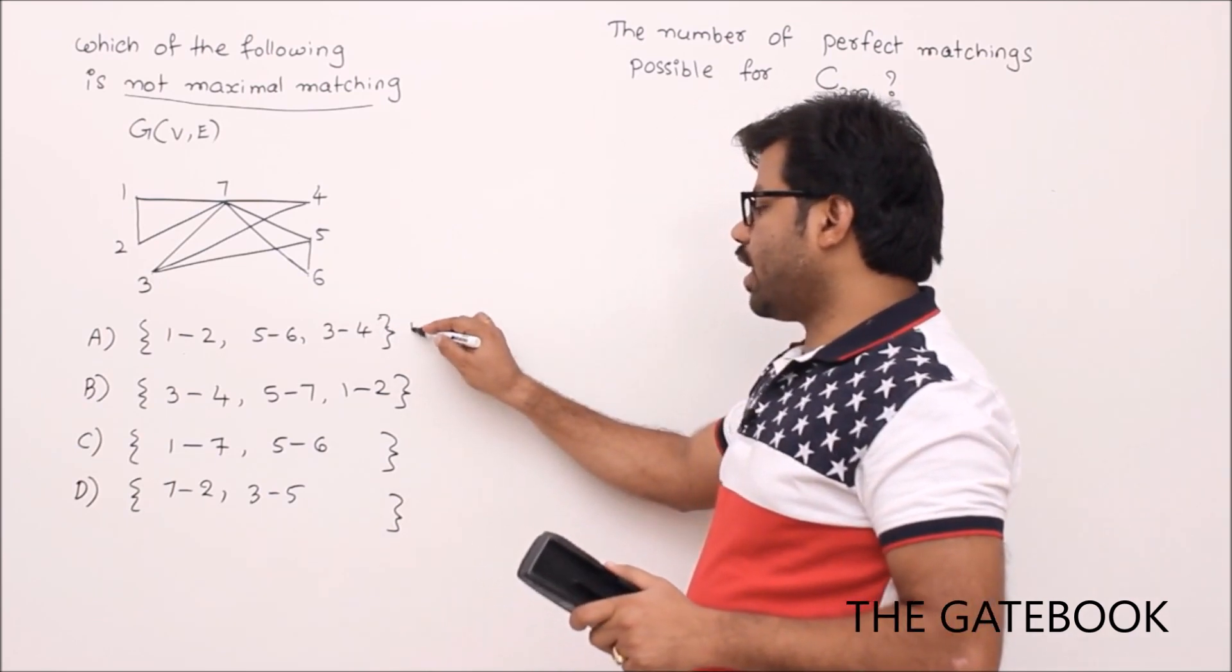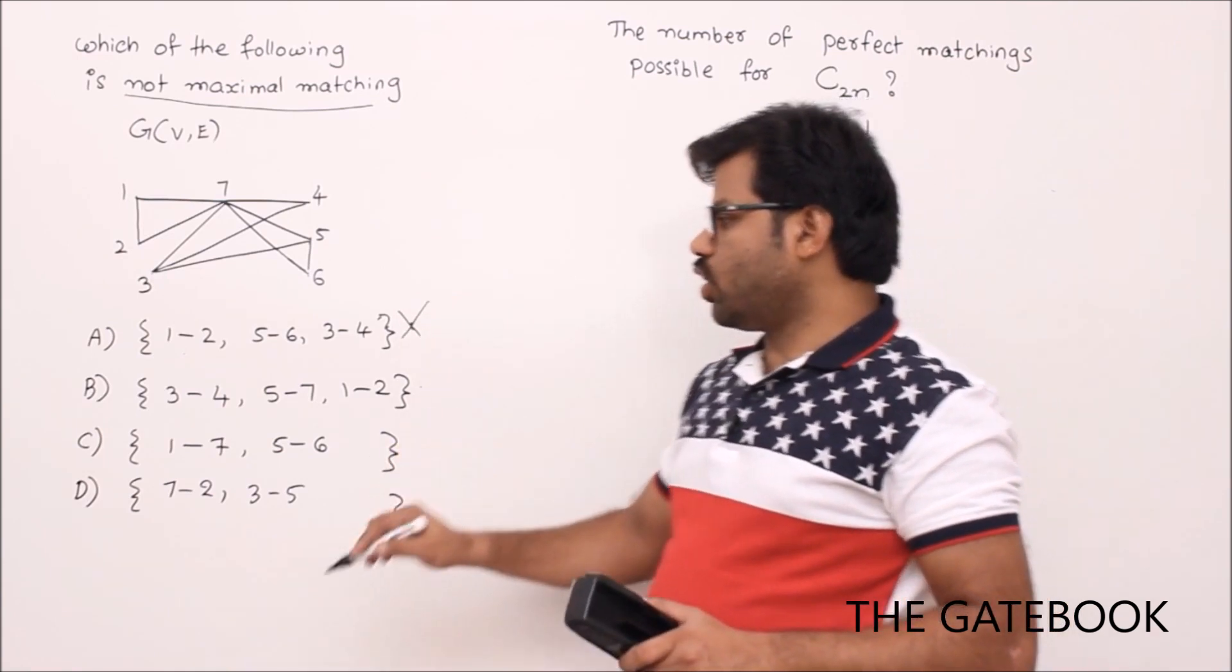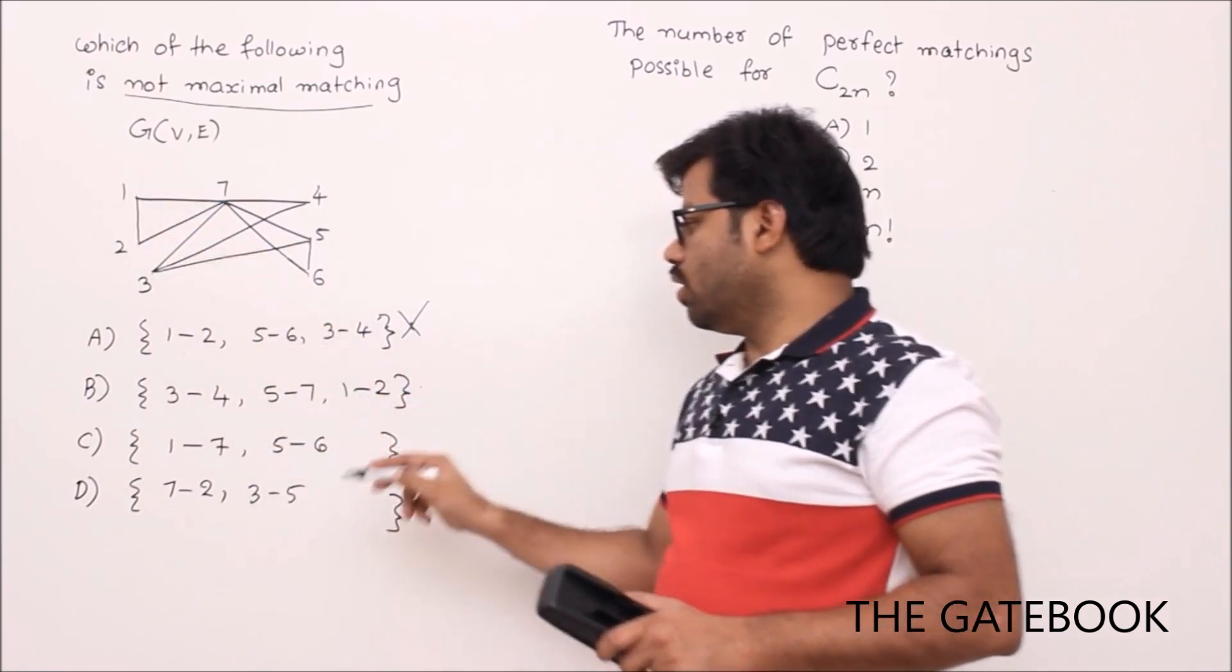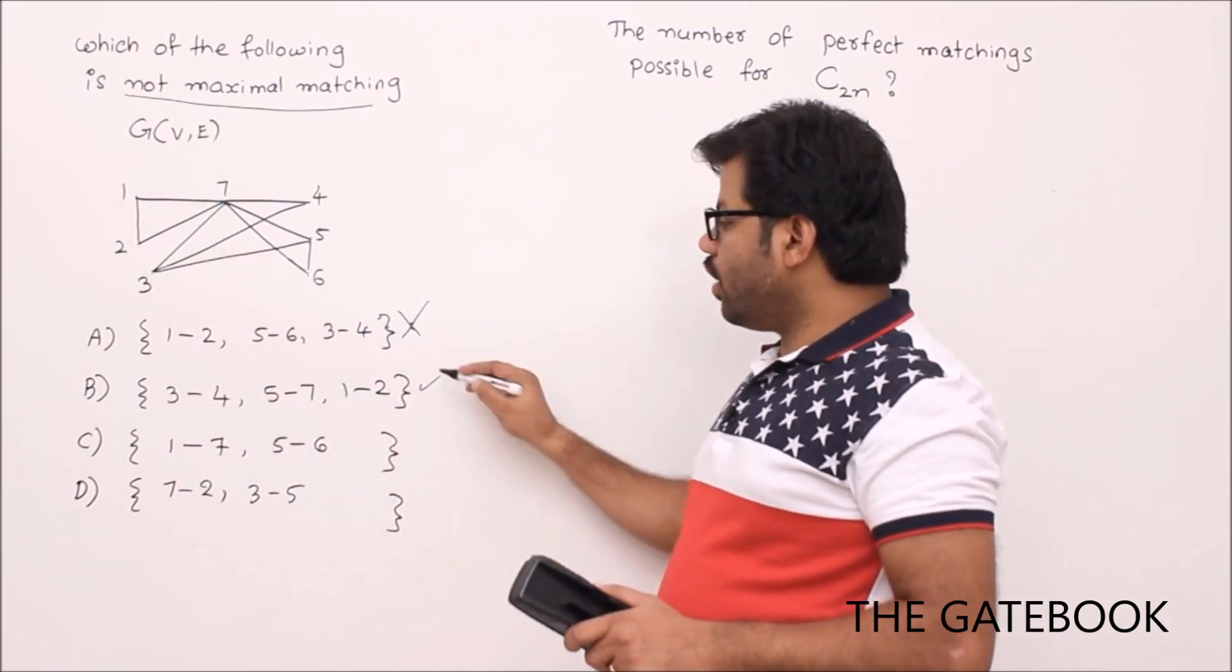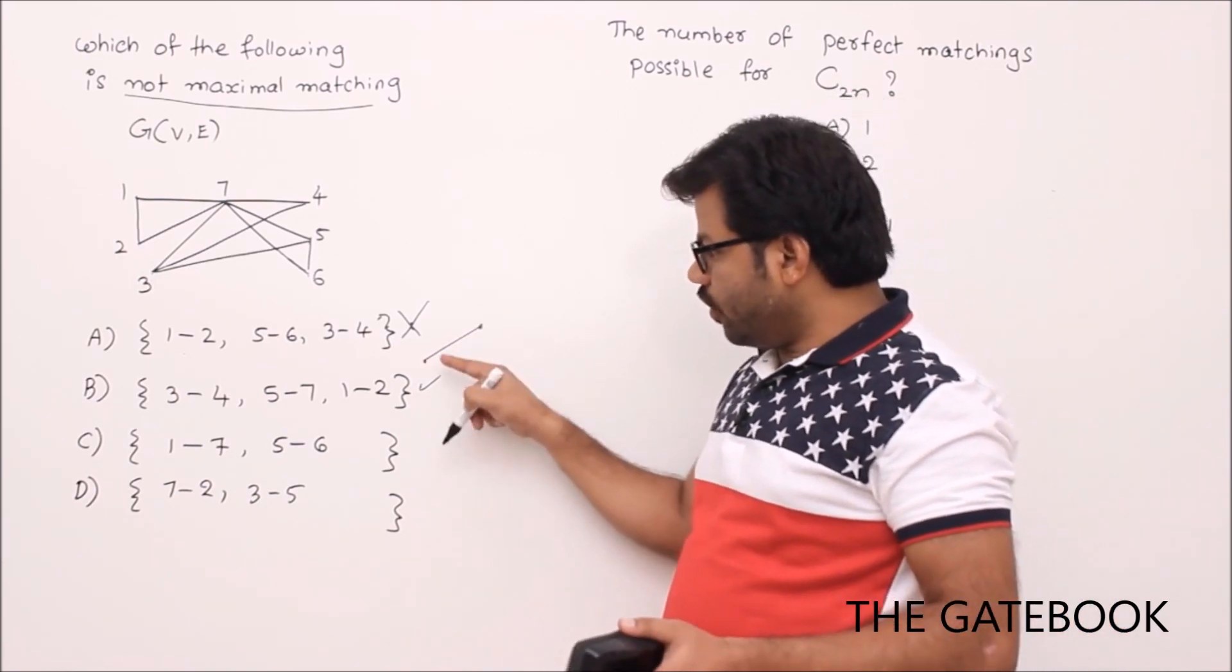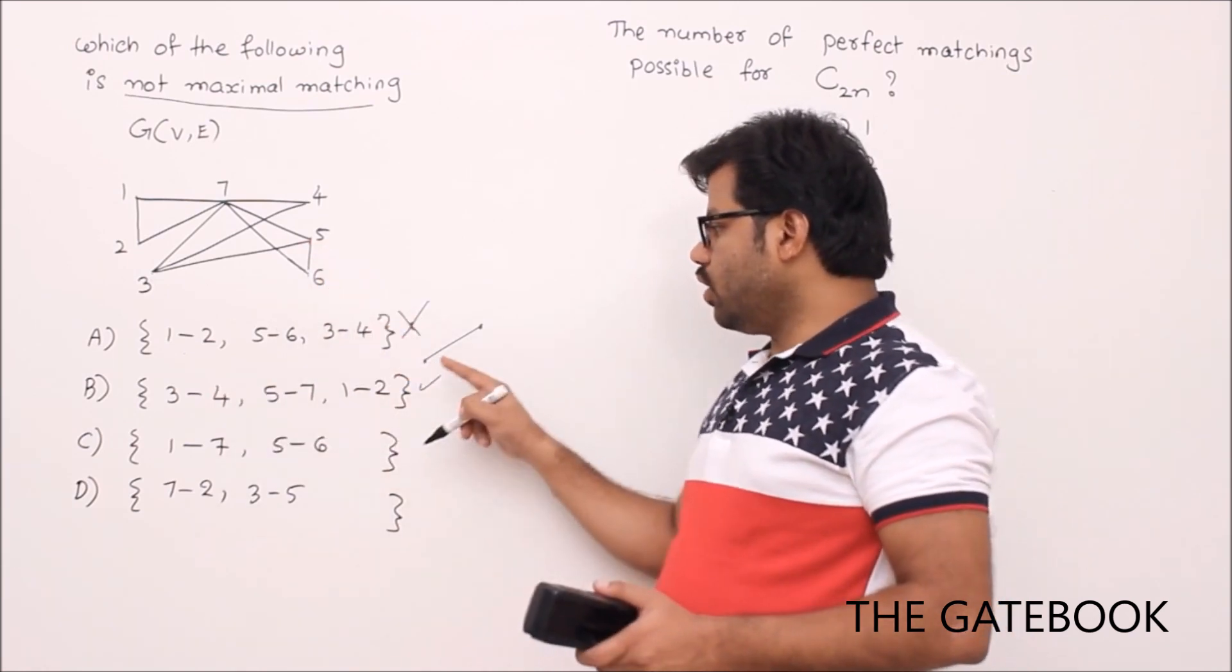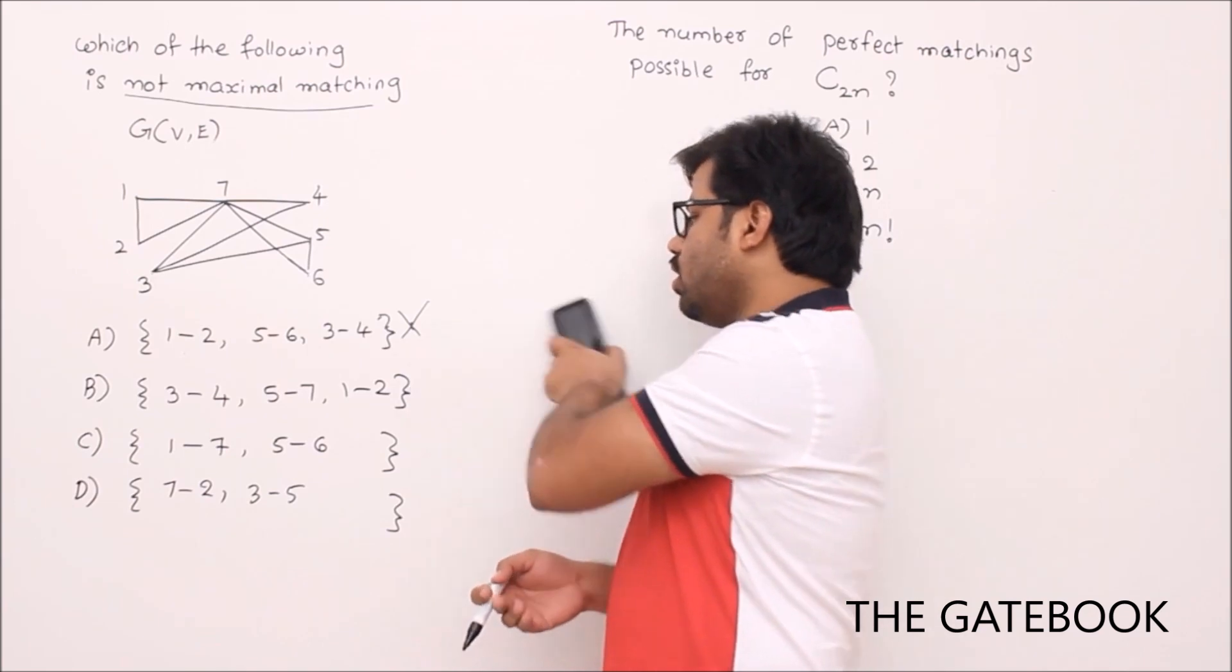That's why for this one you can't further add any edge. This is maximal matching, but I want not maximal matching, so this is wrong choice. Let's go to this one. Same argument - see 3-4, 5-7, 1-2. Already it is covering 6 vertices. If you can add one more edge, then that should have two different vertices, right?